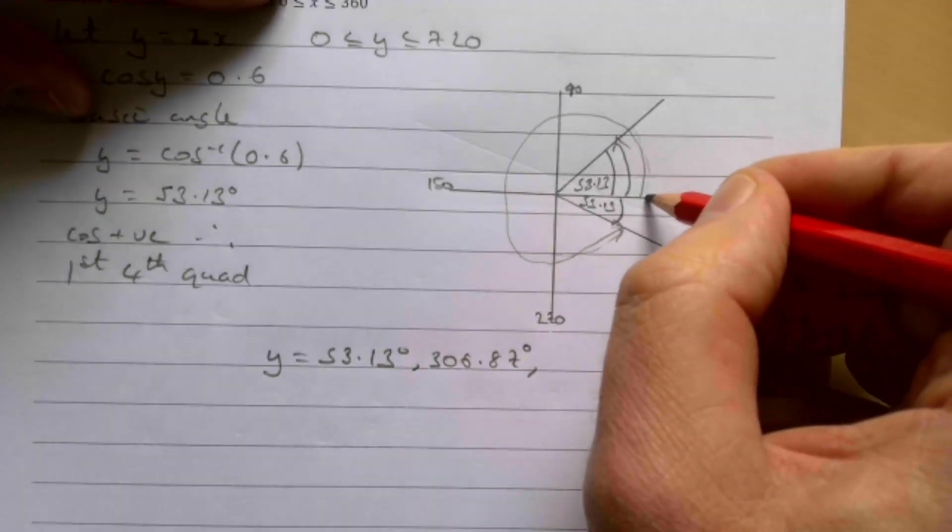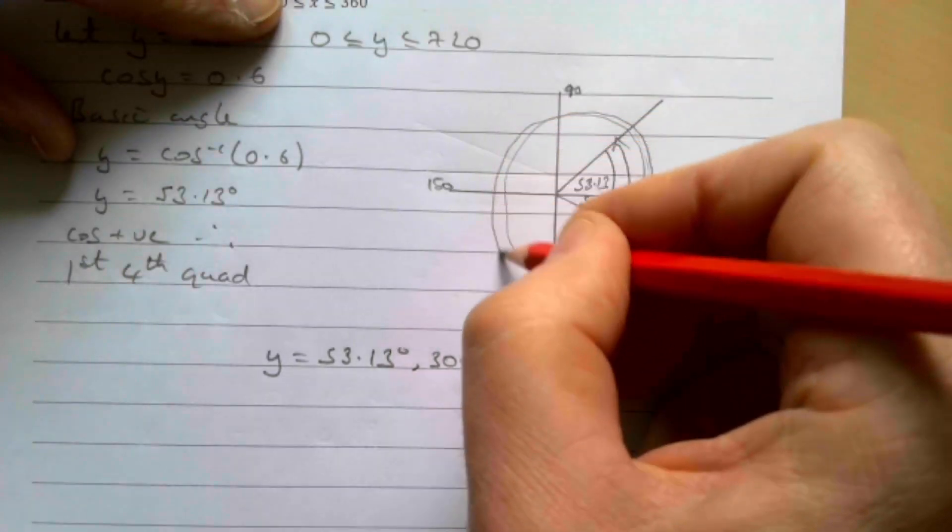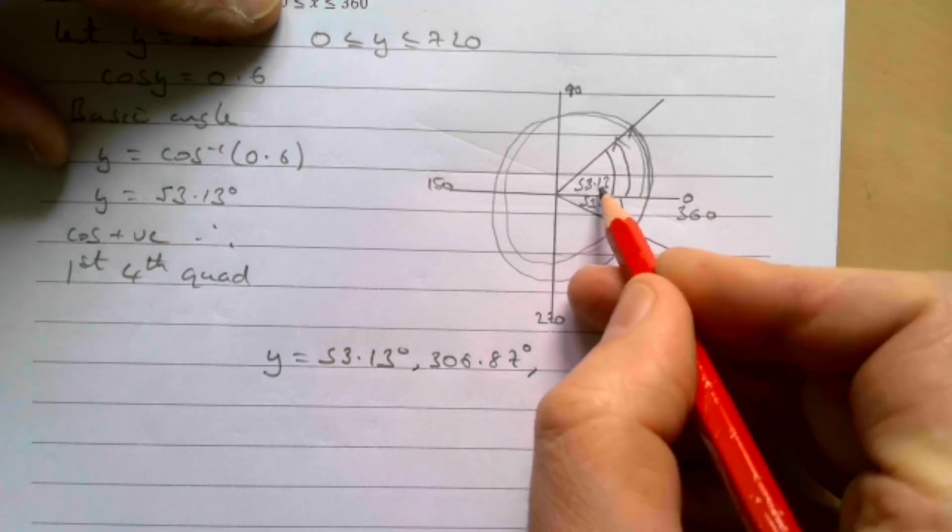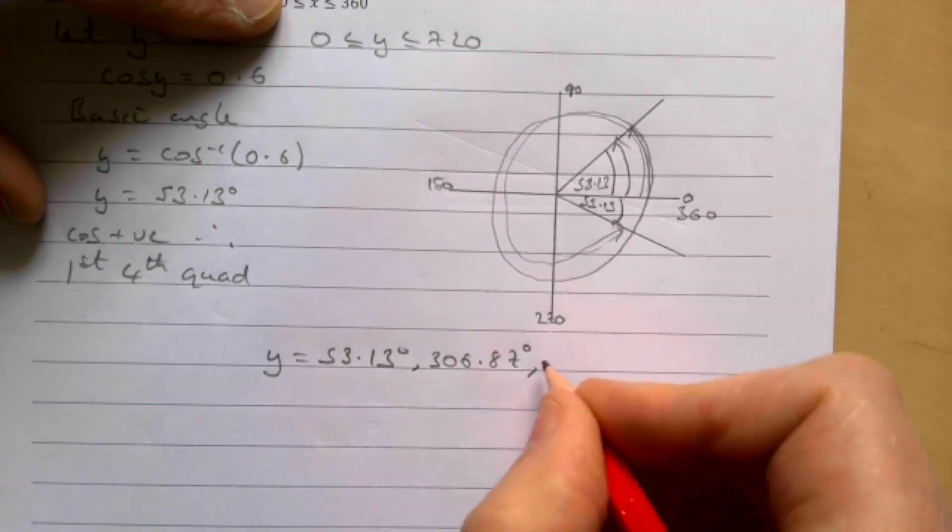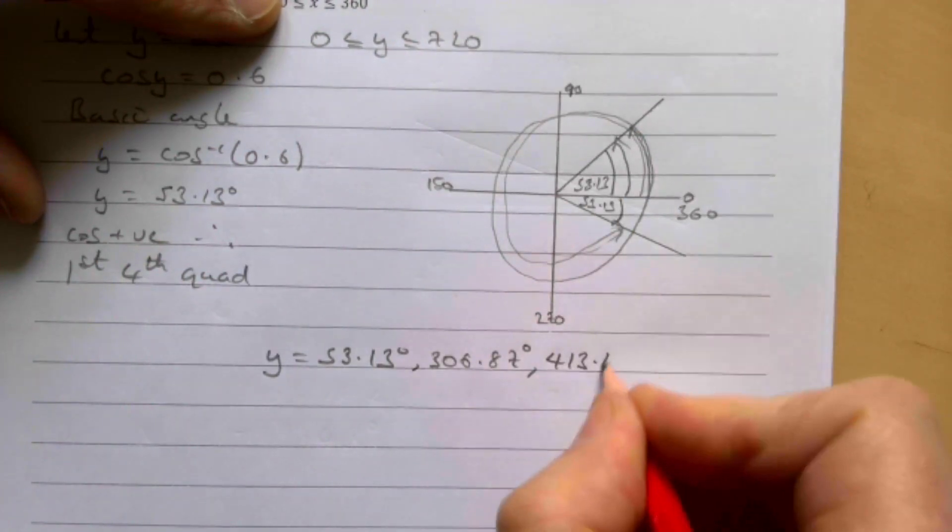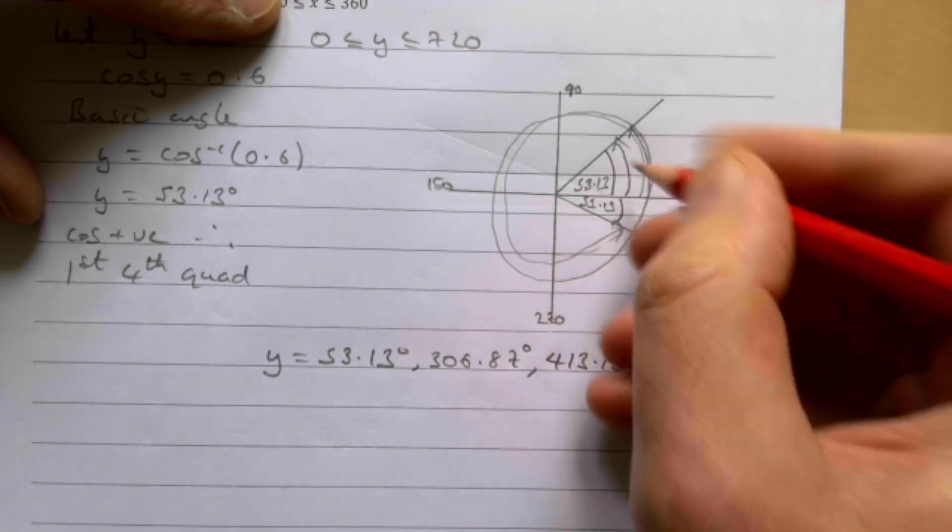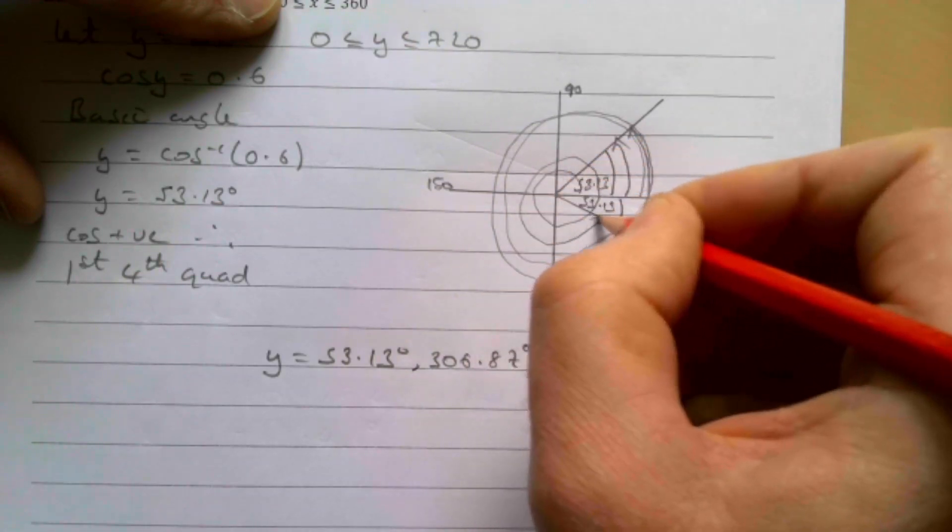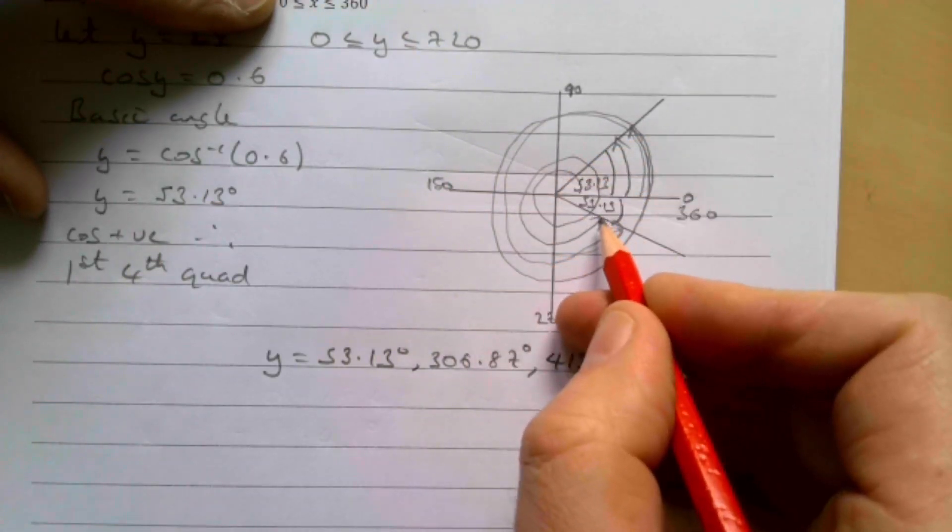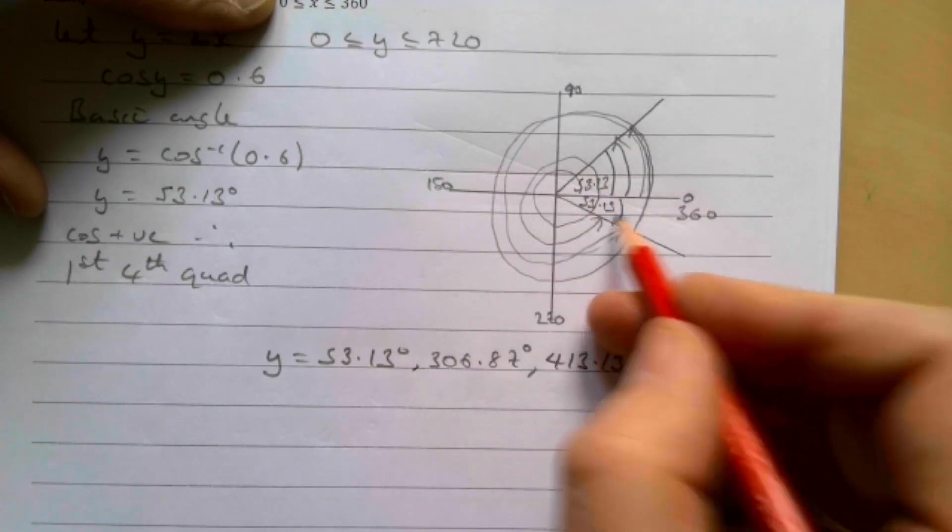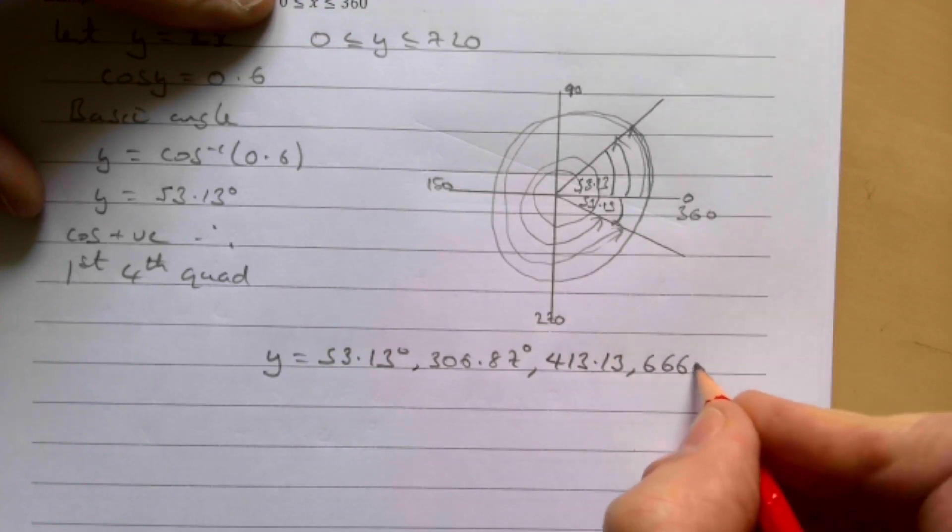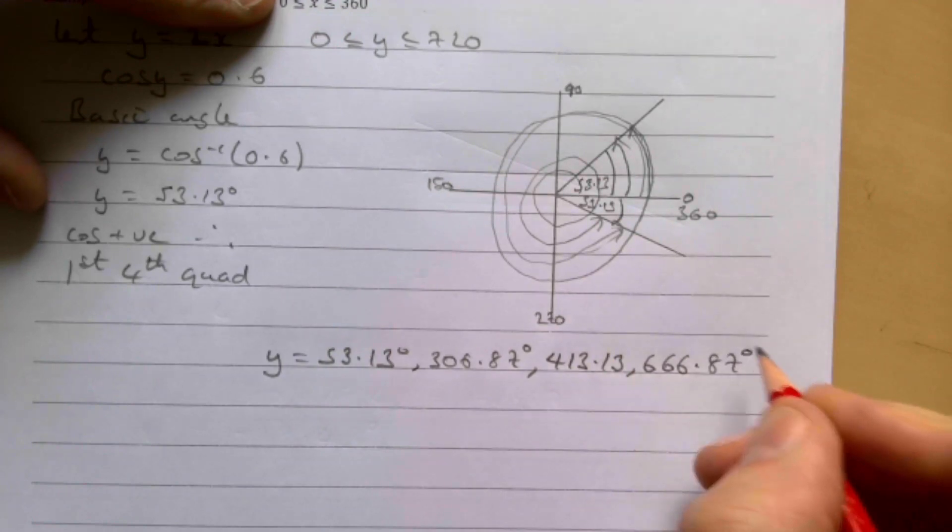We then need to go all the way around to here. That's going to be 360 plus 53.13, so that's 413.13. And the final one is all the way around twice to there, so it's 720 take away 53.13. If you do that you get 666.87 degrees.